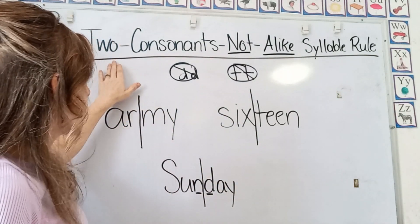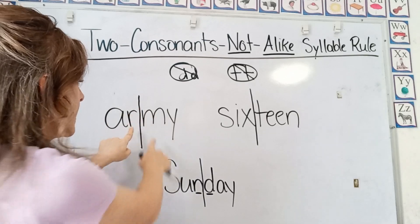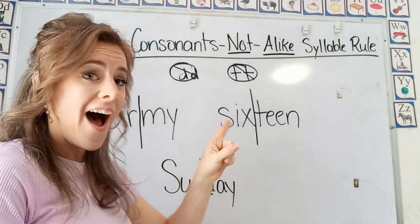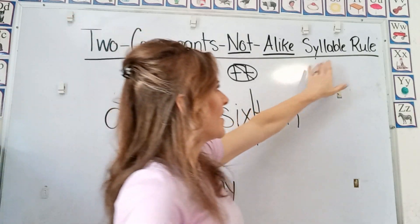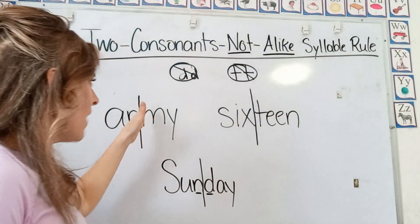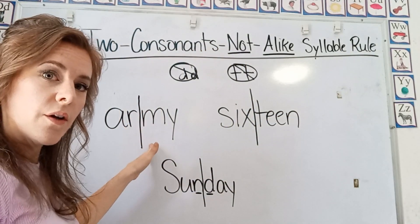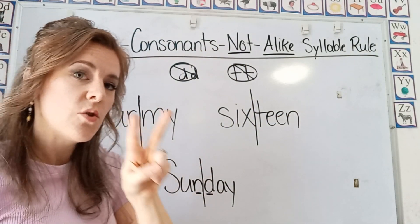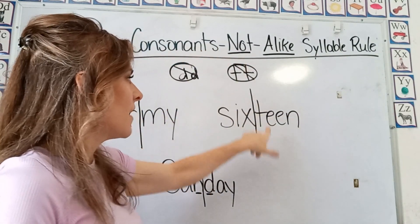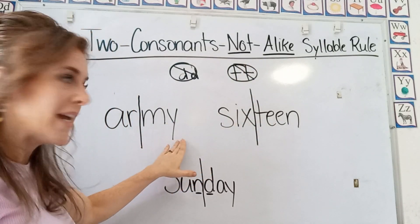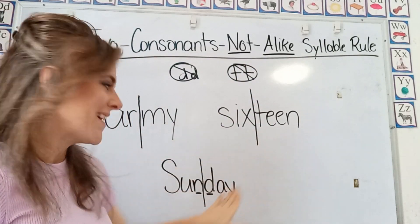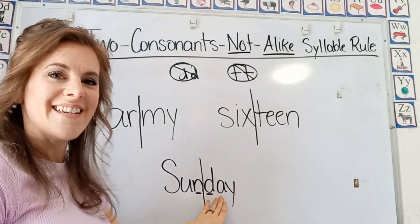So this is our two consonant not alike syllable rule: you can divide a word between two consonants that are not alike. For example: Army, 16, Sunday.